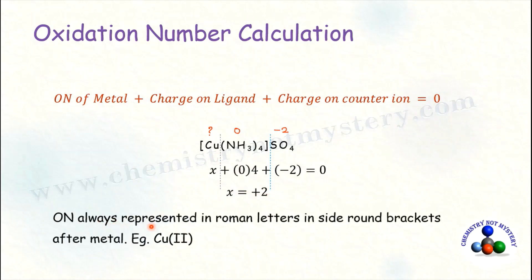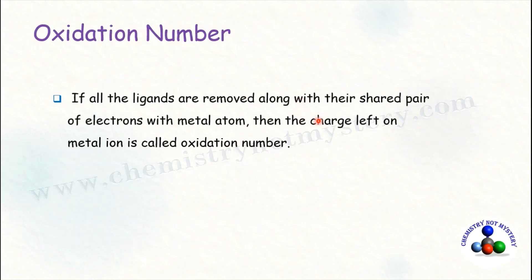Oxidation number is always represented in Roman numerals inside round brackets — for example, copper(II). By definition, oxidation number is the charge left on the central metal ion if all the ligands are removed along with their shared pair of electrons with the metal atom.